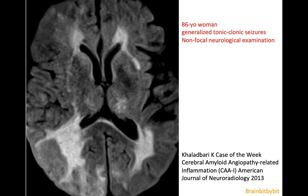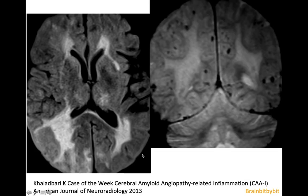This is an example of an elderly woman presenting with seizures and no focal neurological deficits. If you had not seen the previous slide, you might think this FLAIR image with extensive white matter abnormalities represents vascular white matter disease, or if symmetrical, a metabolic cause. But if you also look at the gradient or SWI images, you can see the cause: the microbleeds.